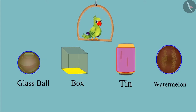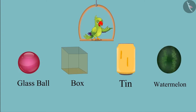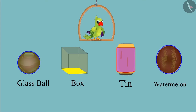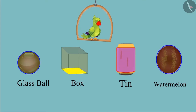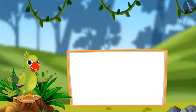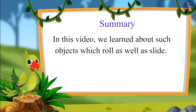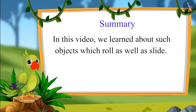So kids, you saw that some objects can slide and even roll, because some of their surfaces are round and some surfaces are not round. So kids, that was all for today. In this video, we learnt about such objects which roll as well as slide. I hope you have understood this topic very well. Bye children.